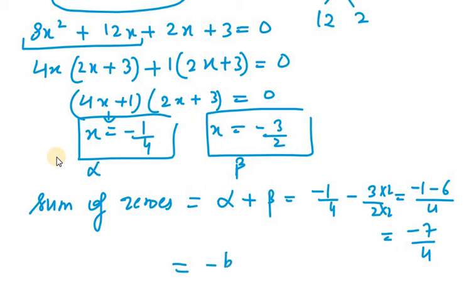Now, we know that sum of zeros is minus B over A and my equation was 8x square plus 14x plus 3.